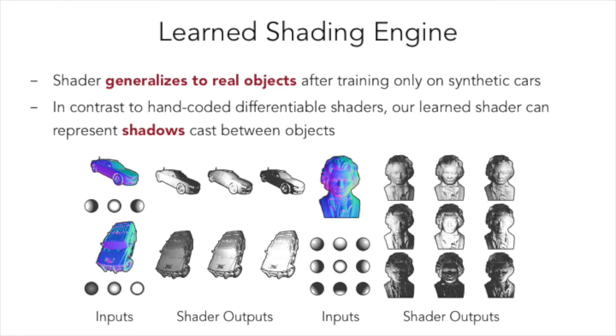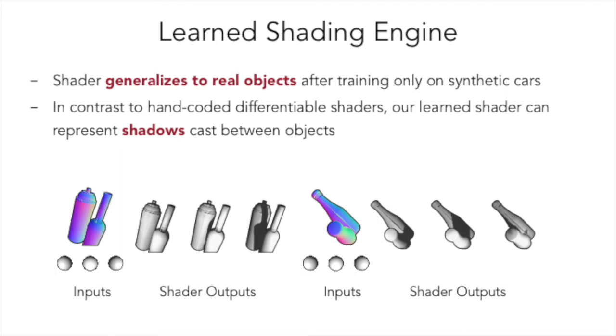When trained on only a narrow distribution of synthetic shapes, it produces plausible shading images for even real objects. It can also learn to produce shadows between objects, a property often missing in these sorts of differentiable shaders.